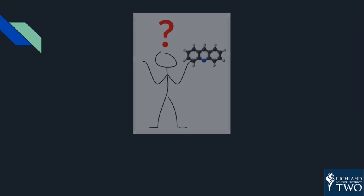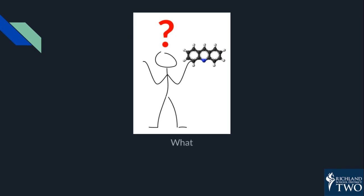So, what do scientists do with all these models? Scientists use models to communicate about things that are too complicated to show any other way. Models are a way for scientists to communicate what something is, what happens, how something works, how things happen, and why things happen. Engineers also use models to communicate their designs.